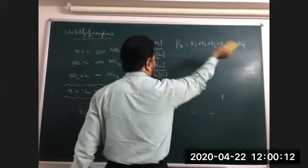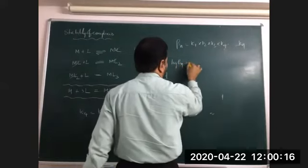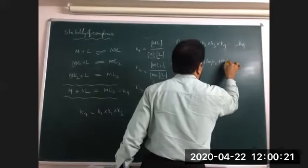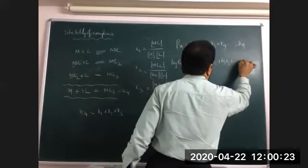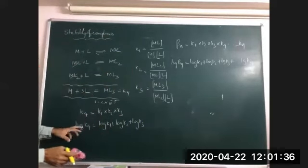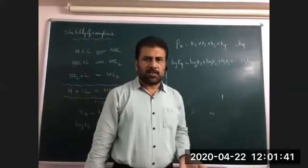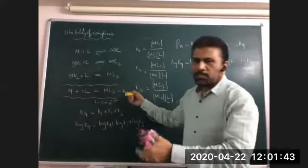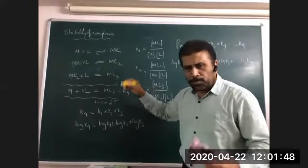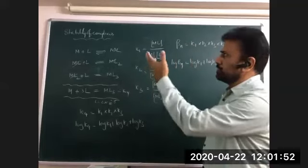Applying logarithms: log βn = log K₁ + log K₂ + log K₃ + ... and so on. The equilibrium constant is a measure of stability — the more the K value, the more is the stability. The reciprocal of this constant is the instability constant. More K means more stability; reciprocal gives instability. This is about the stability of complexes.